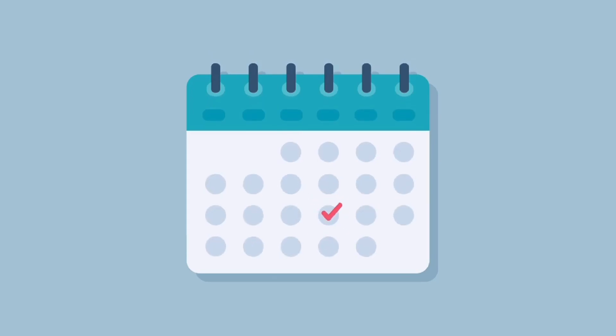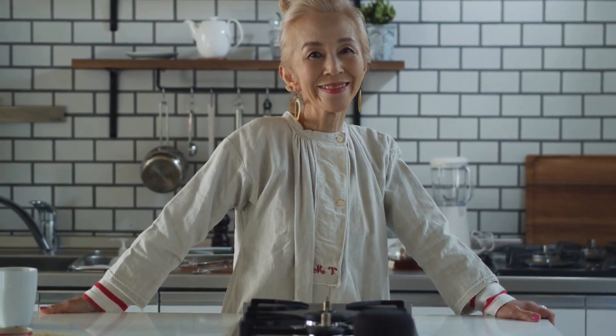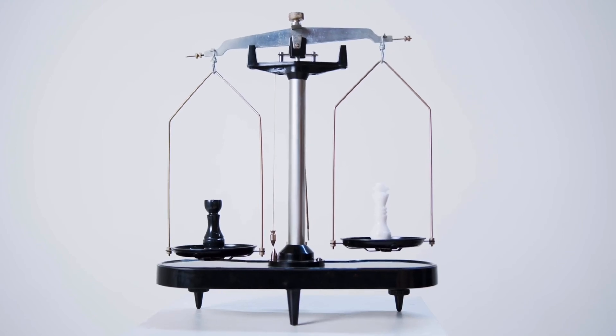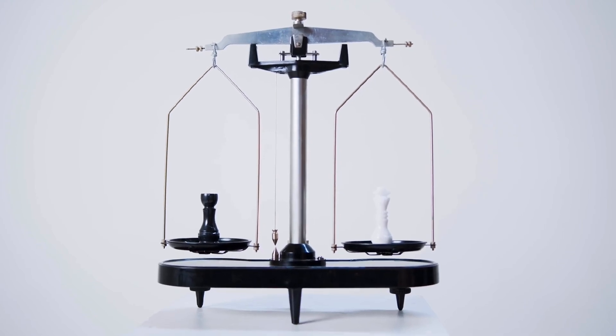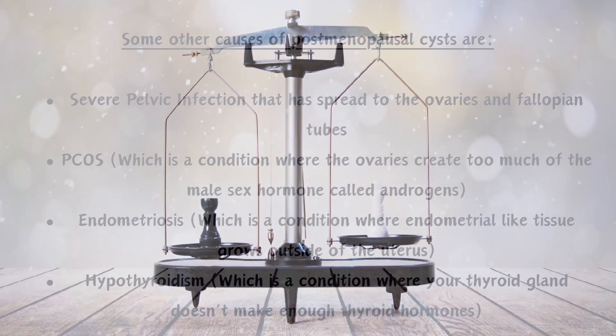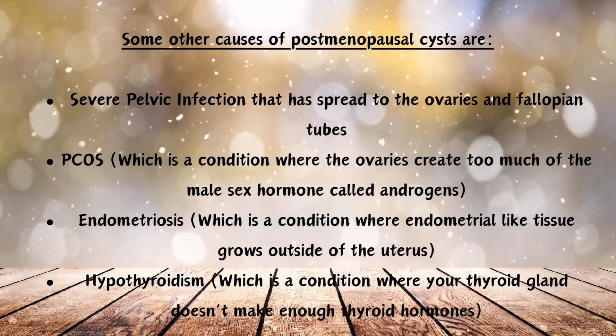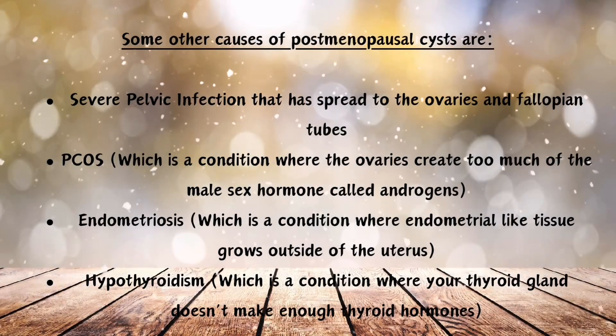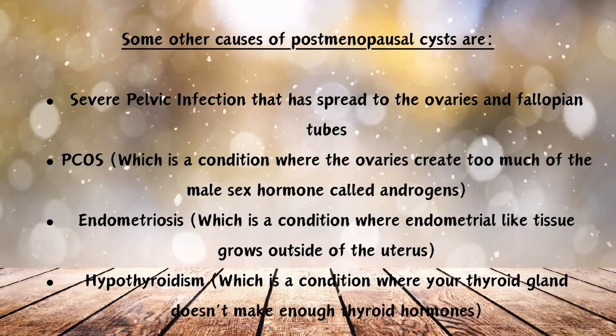Because both of these cysts are related to a woman's monthly cycle and ovulation, they are not typically seen in postmenopausal women due to them no longer having a period and ovulating. However, it is not impossible should something trigger one of the ovaries to try and ovulate, such as some type of hormone imbalance.